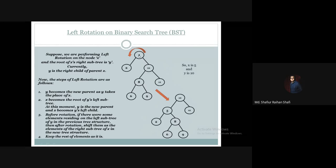10 is now the new root. The previous structure had 8, 6, and 9 as the right subtree, because previously the root was 5. But the new root is 10, so 8, 6, and 9 — which were 10's right subtree — have to be shifted to the left subtree. The elements of 5's right subtree are inserted accordingly.